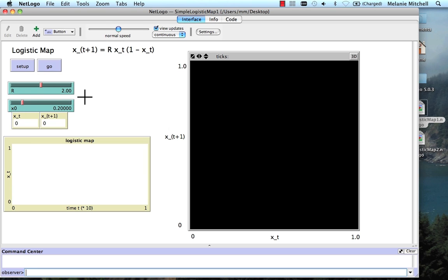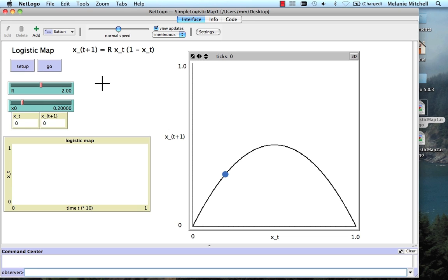Here I can set R with this slider, and I can set the initial value for x, x0. So R is 2, x0 is 0.2. Here's the logistic map, and I click Setup, and it draws my parabola.